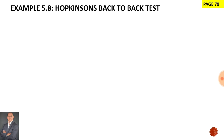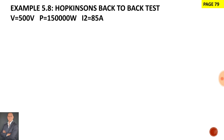Example 5.8 from our textbook states that there are two identical machines which have a terminal voltage of 500 volts and a power of 150,000 watts. The current drawn from the mains is 85 amps. The current taken from the supply is always I2.